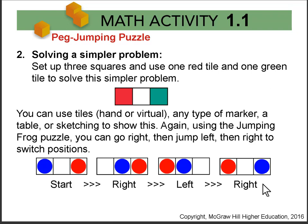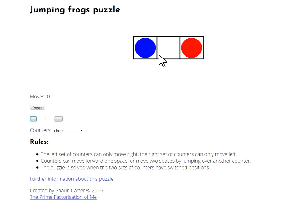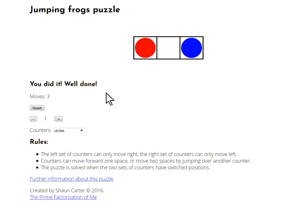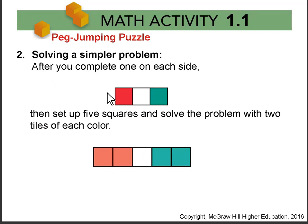I can move the blue to the right, then jump one over the other into a hole, then move blue to the right again, and the puzzle will tell me that I've done it correctly. After you've played around with the puzzle — and you should try the one-on-each-side version yourself — then put two on each side and try to solve the puzzle on your own.